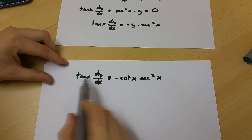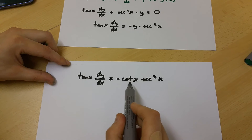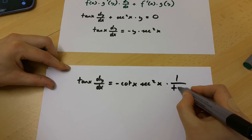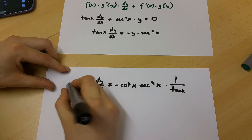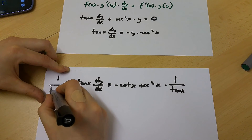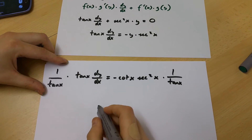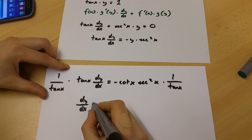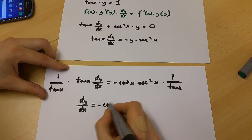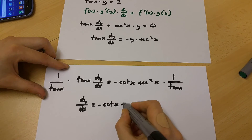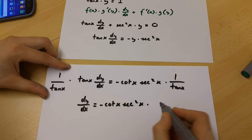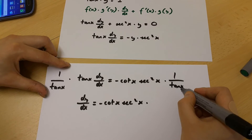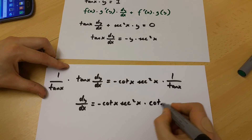From here let's multiply both sides of this equation by 1 over tan x. If we do this we're going to get dy over dx is equal to minus cot x multiplied by sec x squared multiplied by cot x, as 1 over tan x is cot x.